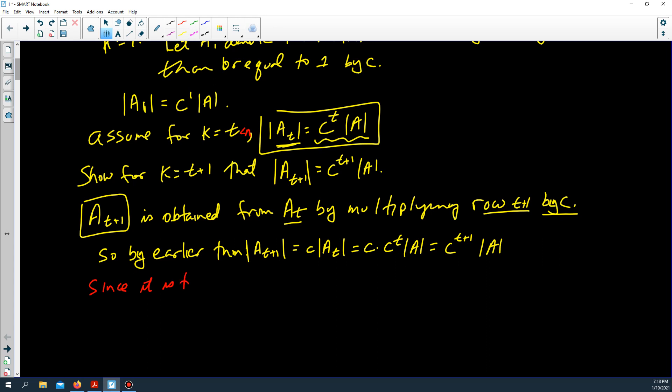Since it is true for all k less than or equal to n, it makes no sense for k to be bigger than n. There are only n rows to multiply. Since it is true that the determinant of A_k is equal to c to the k times the determinant of A...